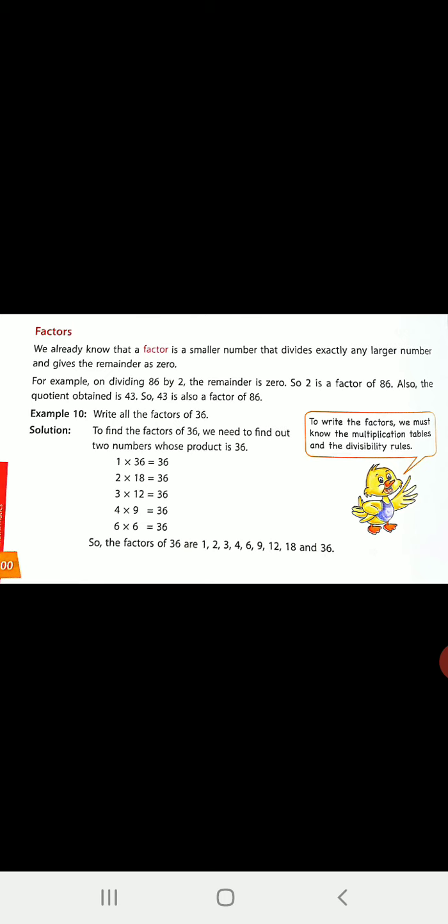Let us see how. Here they have given a few examples. On dividing 86 by 2, the remainder is zero. In the two table we have 86, so it will get cancelled completely and what will be left is zero. So we can say 2 is the factor of 86. Also, the coefficient obtained is 43, so 43 is also a factor of 86. That means when you multiply 43 and 2, the answer is 86. So the tables in which you get the number, all those table values are called as factors.